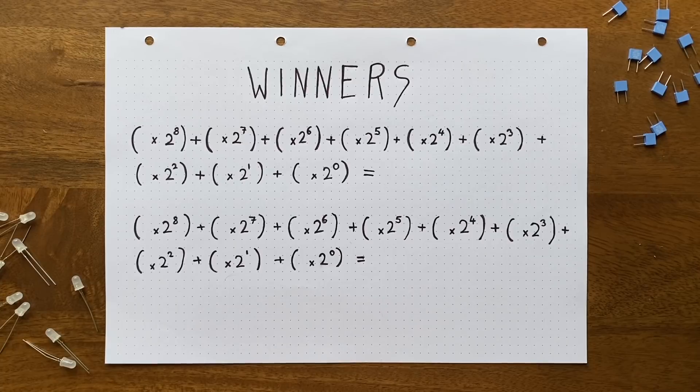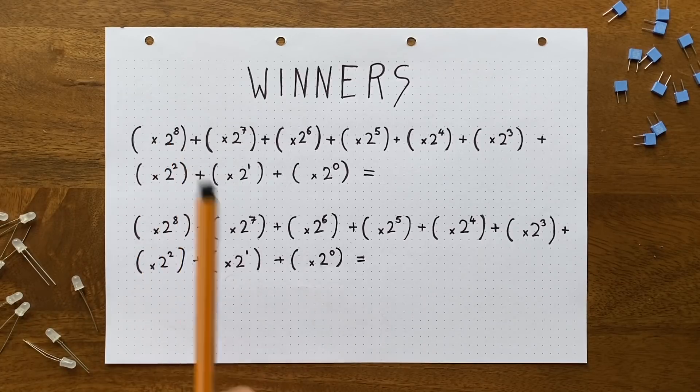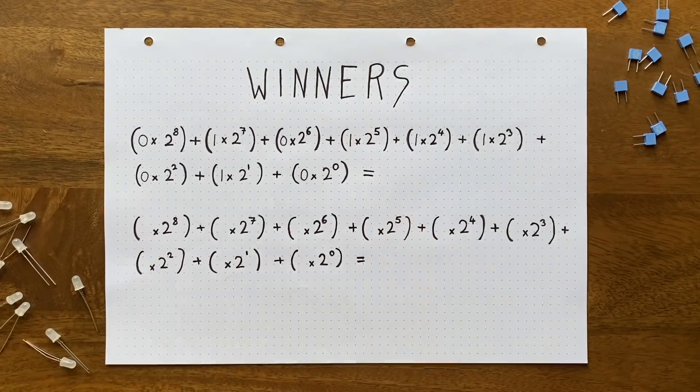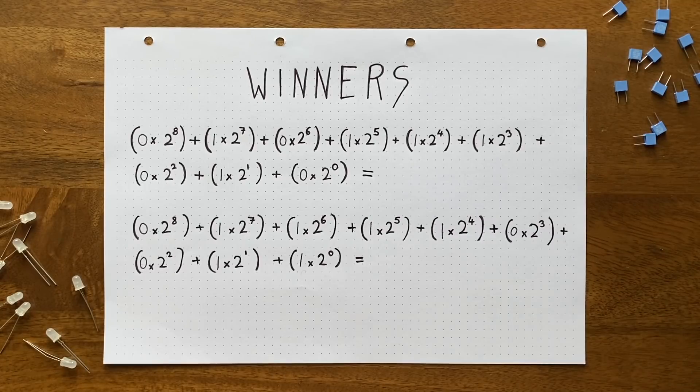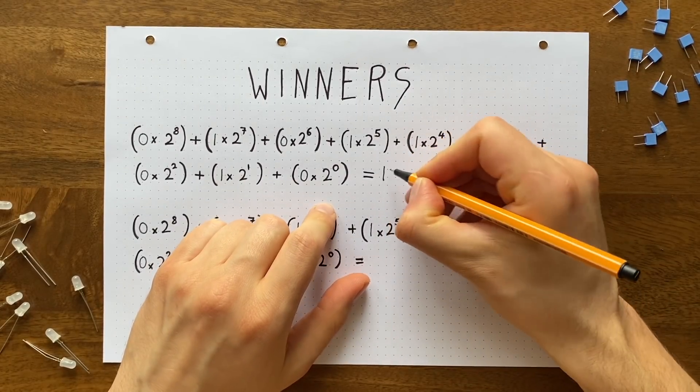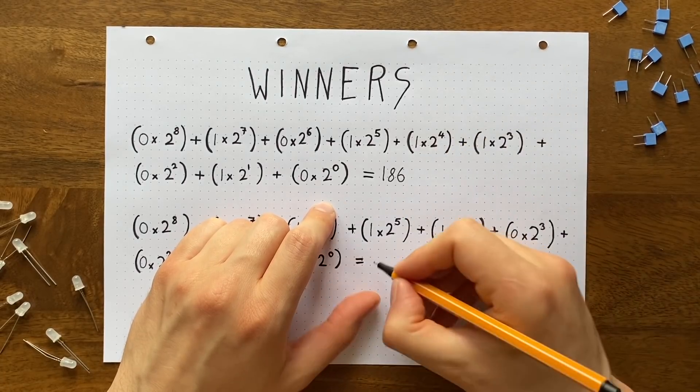Cool. Now to convert these numbers into decimal, we simply use this formula, where you take the value of each bit, multiply it by 2 to the power of the bit's position, and then add all the results together. And our winners are 186 and 243.